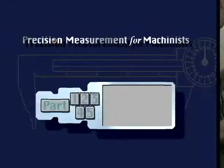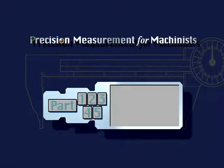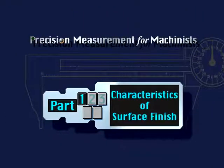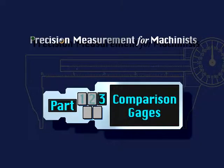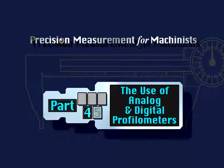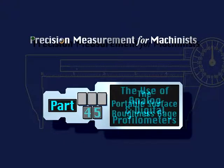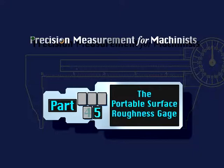There will be five parts to this lesson. Part 1 will discuss the characteristics of surface finish. Units of measure for surface finish will be covered in Part 2. Part 3 explains comparison gauges. Part 4 covers the use of analog and digital profilometers. And Part 5 will introduce the portable surface roughness gauge.